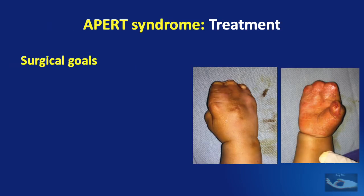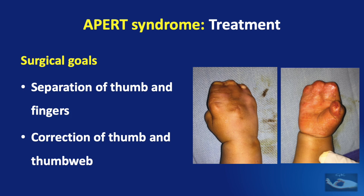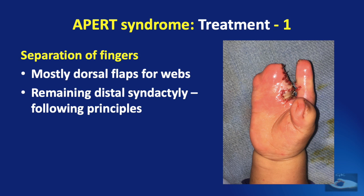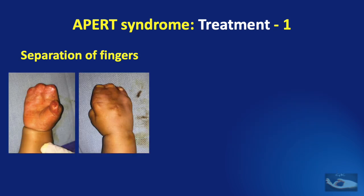The surgical goals in management of the hand in Apert syndrome are separation of the thumb and fingers and correction of the thumb web. The procedure for separation of fingers in the Apert hand follows the same principles as for syndactyly release. We mostly use dorsal flaps for resurfacing the webs, and the remaining distal syndactyly is released following established principles. In this example, in the first stage the index and middle finger were released, and then in the second stage the ring and little fingers were released.